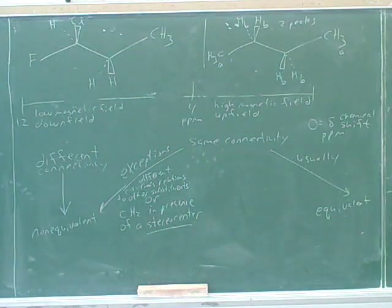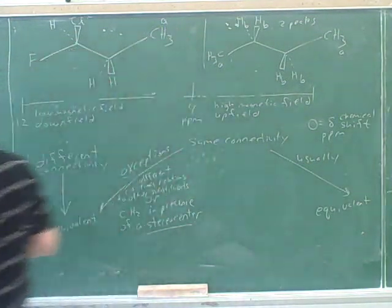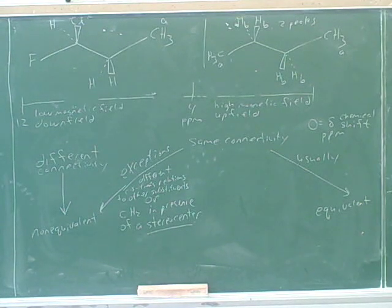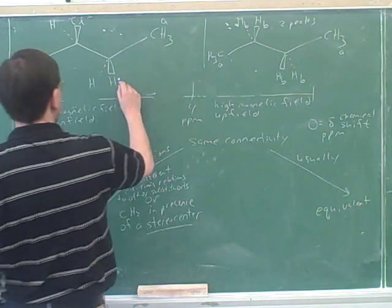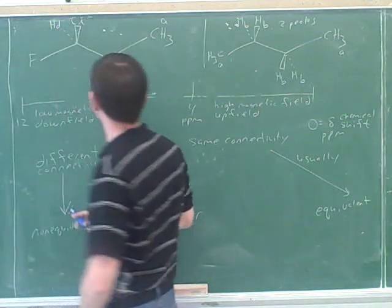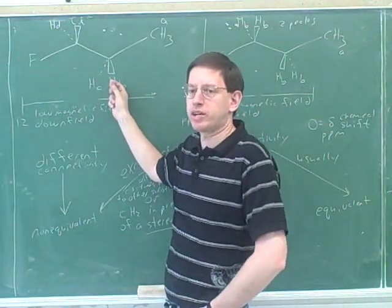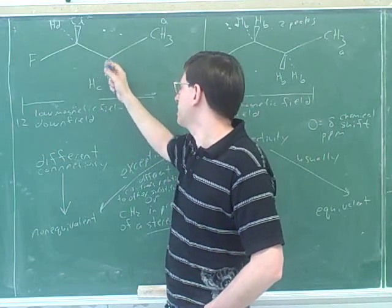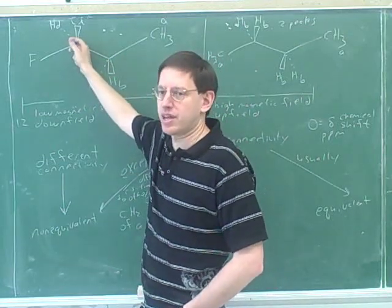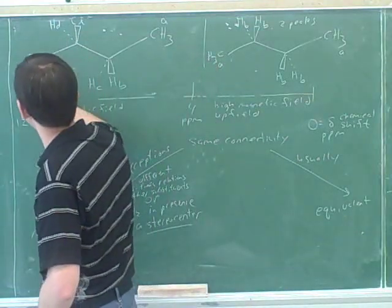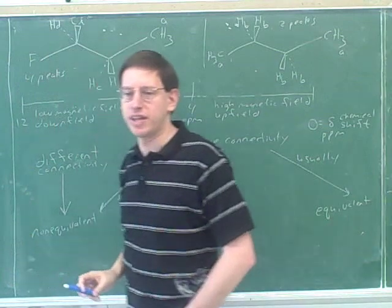We'll determine how many peaks there would be here. Let's put in some letters in this case. Okay. A on the far end. Let's see. B, C, and D. That's good. Now normally we would treat these as equivalent. Normally they would be equivalent because they're on the same carbon. However, here there is a CH2 group in the presence of a stereocenter. So this is our exception where they're really non-equivalent. So it looks like you were correct and we would get four peaks. That's good.